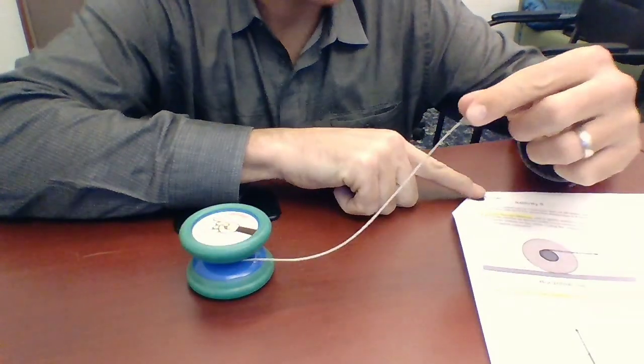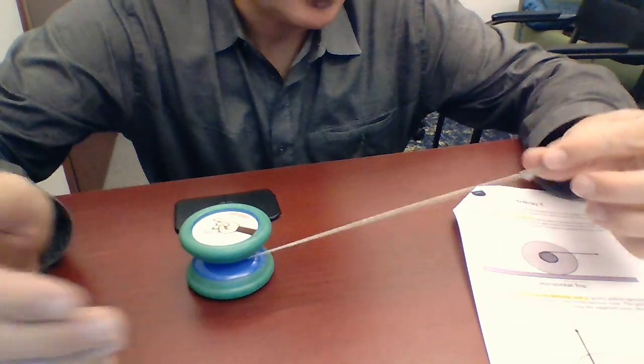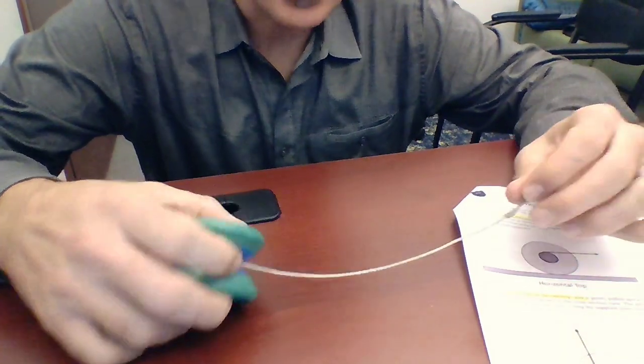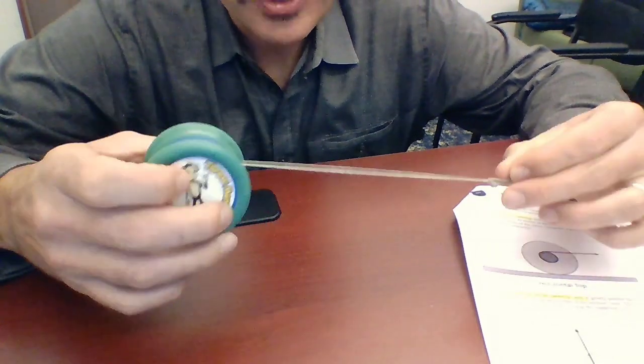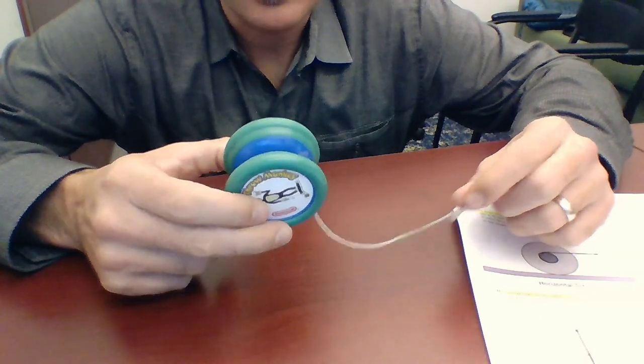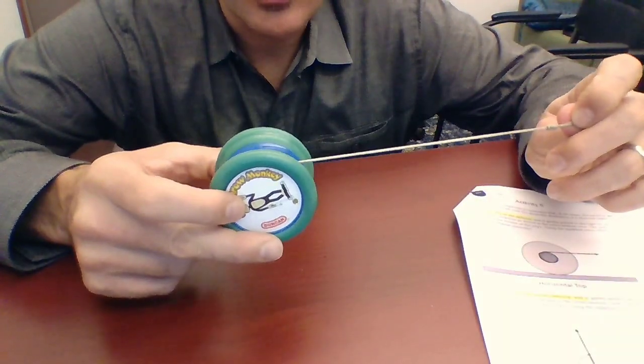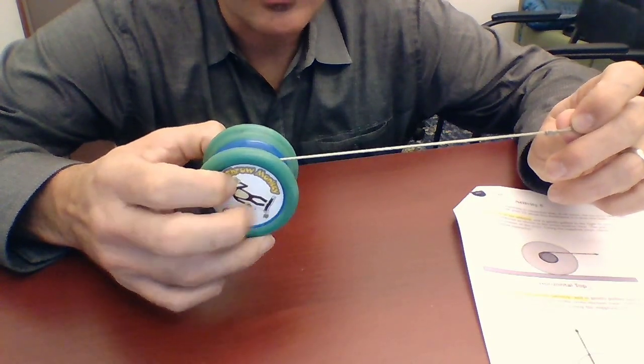Now I'm going to go through the observations for Activity 5 in order. So there's parts A, B, C, and D. And in each case, I'm going to gently pull the string and you're going to record whether the yo-yo turns clockwise or counter-clockwise.